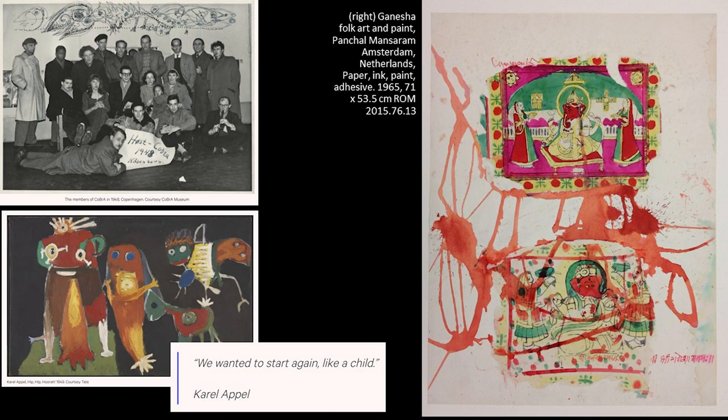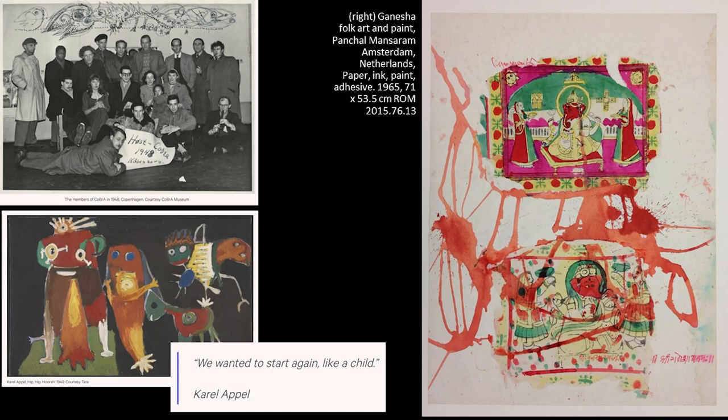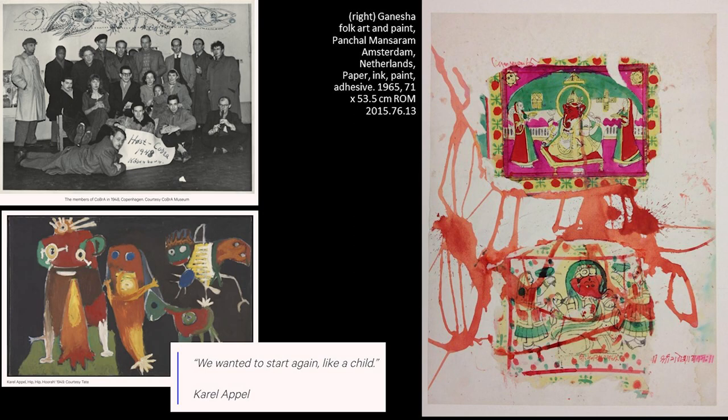He obtained a fellowship to go study in Amsterdam, and while there he encountered what was called the Cobra group — a group of artists involved in artistic experimentation including spontaneity and intuition. You see the artist group and an example of their artwork: they were very much involved in bold colors, a kind of layering of imagery almost like collage, as well as including folkloric elements. An early piece by Mansaram reflects some of this experimentation, where he actually glued fragments of Rajasthani popular culture — a print showing the Hindu god Ganesh — collaged onto paper, with a spontaneous ink wash drawing on top of it.